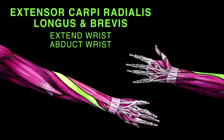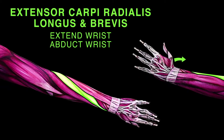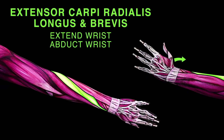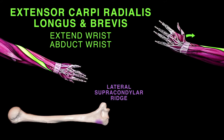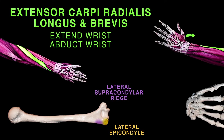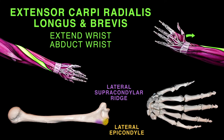Extensor carpi radialis longus and extensor carpi radialis brevis extend and abduct the wrist. They are both on the lateral side of the posterior forearm. The extensor carpi radialis longus originates from the supracondylar ridge, while the extensor carpi radialis brevis originates from the lateral epicondyle. Their tendons attach to metacarpal bones 2 and 3.